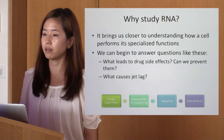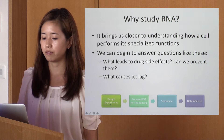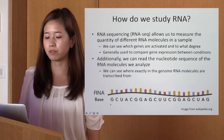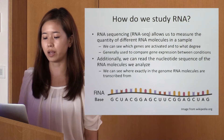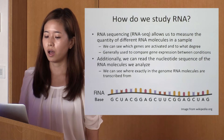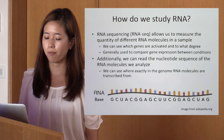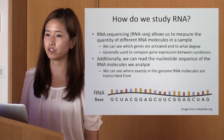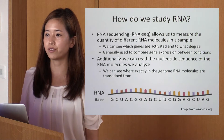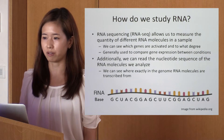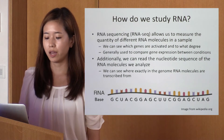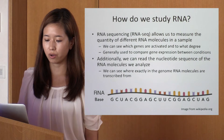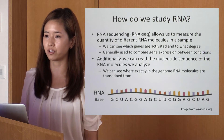An RNA sequencing experiment starts with the first step: researchers set up the experiment to address their questions. RNA sequencing allows us to measure the quantity of different RNA molecules in a sample — we can see which genes are activated and to what degree. Generally, RNA-Seq is used to compare gene expression between conditions such as drug treatment and control, and using that information you can see which genes are up- or down-regulated. Additionally, we can read the nucleotide sequence of the RNA molecule and see where exactly in the genome RNA molecules are transcribed from.